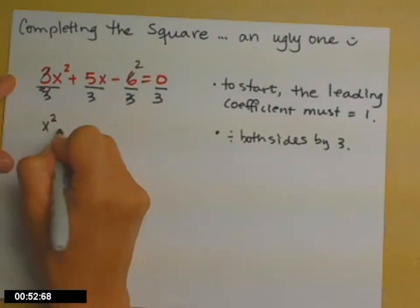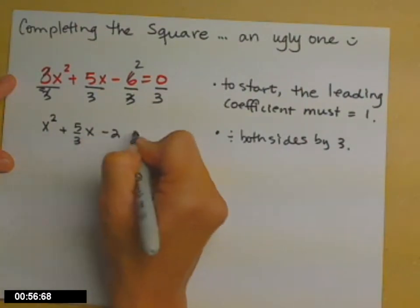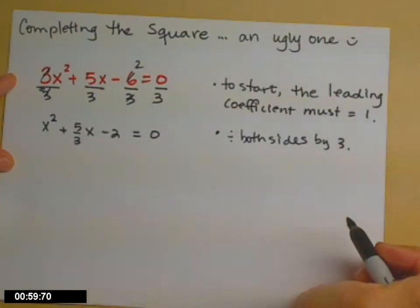Then we'll reduce each of those that can be reduced. It gets us to x squared plus 5 thirds x minus 2 equals 0. It's still a 0 on the right-hand side. 0 divided by 3 is still 0.